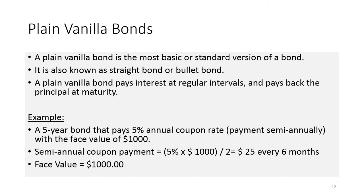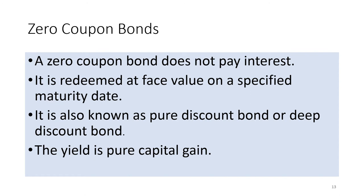US Treasury bonds issued by the government are examples of straight bonds. A zero-coupon bond is a debt security that does not pay interest but instead trades at a deep discount, rendering a profit at maturity when the bond is redeemed for its full face value. The buyer of the bond receives a return by the gradual appreciation of the security, which is redeemed at face value on a specified maturity date. It is also called a pure discount bond or deep discount bond. The US Treasury bills are an example of a zero-coupon bond. The difference between the purchase price of a zero-coupon bond and the par value indicates the investor's return. Reinvestment risk is not relevant for zero-coupon bonds, but interest rate risk is relevant for the bonds.